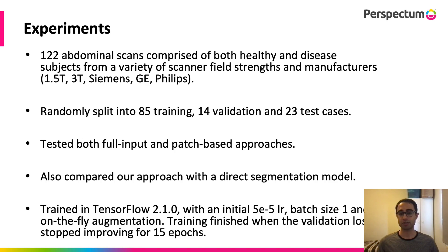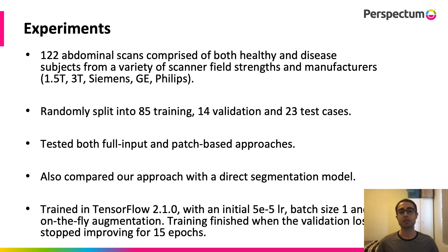The dataset used had a total of 122 abdominal scans, randomly split into training, validation, and test sets. We tested two versions of the heatmap regression model: one where the whole input image is isotropically resized to fit the model, and a second where patches of consistent resolution are extracted and predicted separately. We also compared the derived masks to those obtained from a standard direct segmentation model trained on masks directly.